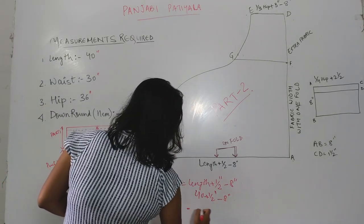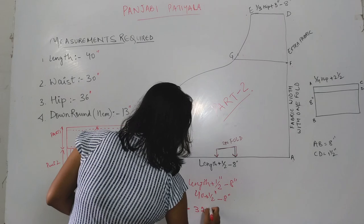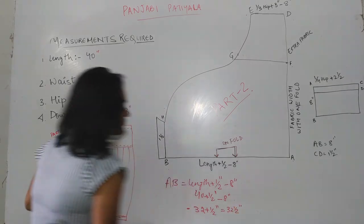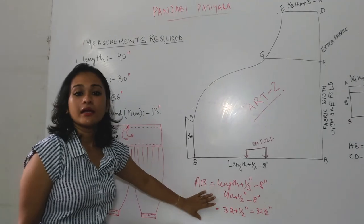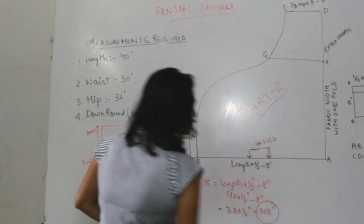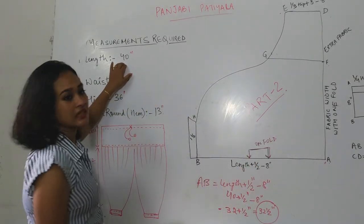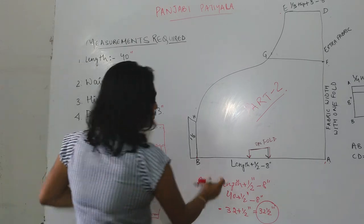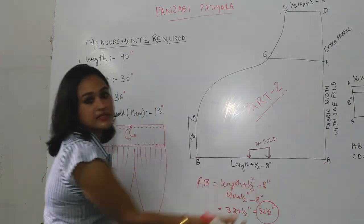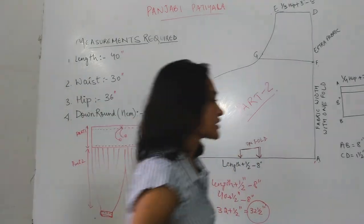This is the fold line. We calculate and we will get the length plus half inch. If my length is 40 inches, similarly if length changes — if you think the length is 30 — you will get 30 plus half minus 8 inches. With this formula, you will get the required length — the customer's length, the customer's value.